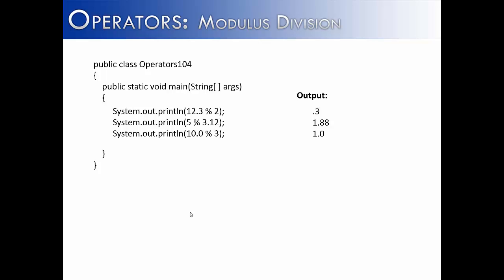The next example, we have 5 mod 3.12, and the last example, we have 10.0 mod 3. And we know from the previous examples that 3 goes into 10 three times with a remainder of 1. And because it has the 0.0 at the end, it's going to indicate that we're using real numbers, as in 1.0.